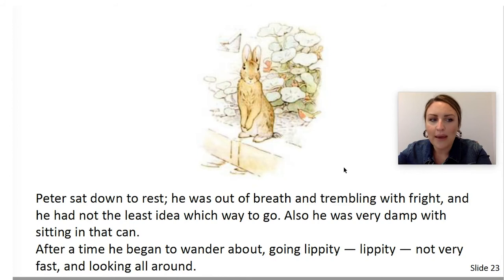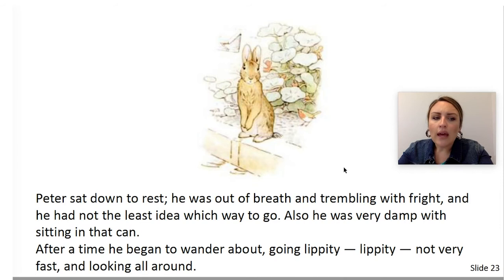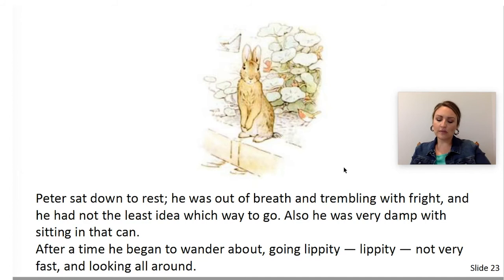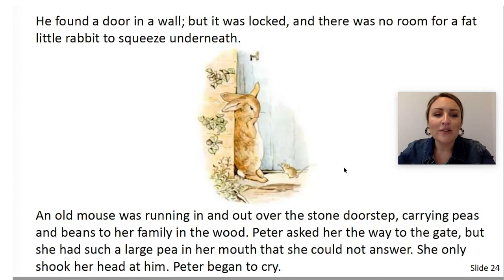We heard another vocabulary word too. Listen as I reread and twitch your nose like a rabbit when you hear it. After a time, he began to wander about, going lippity, lippity, not very fast, and looking all around. Yes, the word is wander. We know that Peter is lost — he's looking all around, he doesn't know which way to go. To wander is to walk around or move without knowing your direction. What are we going to draw to help us remember wander? I am going to draw someone with a question mark above her head while she's walking. Wander means just walking around without knowing where you're going.